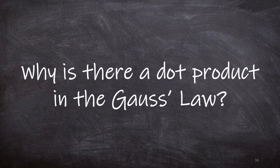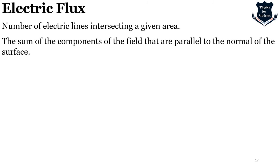Why is there a dot product in Gauss's law, rather than a cross product? To understand this, we first need to understand electric flux. The word 'flux' means flow, or act of flowing. When related to an electric field it is called electric flux; when related to a magnetic field, it is called magnetic flux.